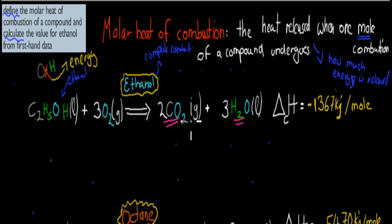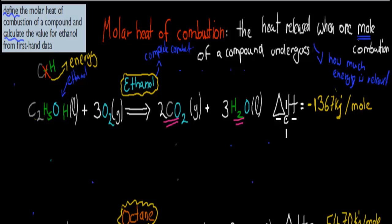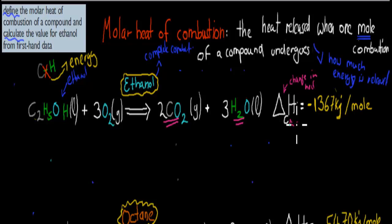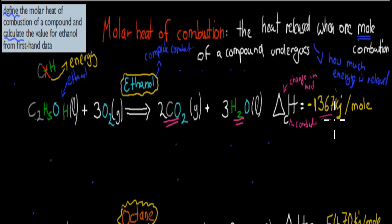CO2 obviously contributes to global warming and comes out of the exhaust. This is the complete balanced equation for complete combustion of ethanol. The amount of energy released — delta H_c, where delta H is change in heat and C is for combustion — is 1,378 kilojoules per mole. So for every mole we have here, we release this much energy.